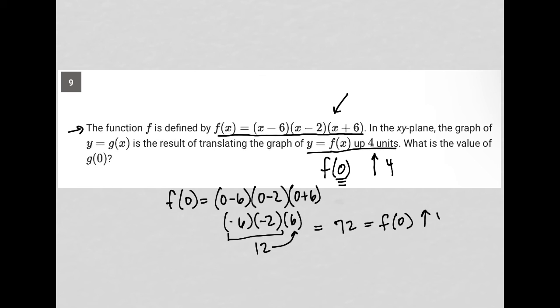Then when I shift up 4 units, that would be g(0) is equal to 76. Okay, so hopefully that logic makes sense. If g(x) equals y and y is simply just f(x) but then shifted up 4 units, then we found our f(x) here at being 72 and therefore our g(x) is just that same exact thing shifted up 4 units. So 76 would be our answer here.